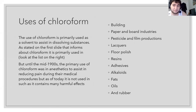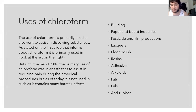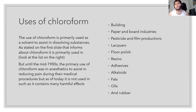Chloroform has many uses. One of the primary uses is as a solvent — it helps dissolve substances, as stated earlier. Looking at the examples on the right of the screen, chloroform is used in building, paper and board industries, pesticides, and even film production, which is fairly interesting. Additional industrial and home uses include lacquers, floor polish, resins, adhesives, alkaloids, fats, oils, and rubber.